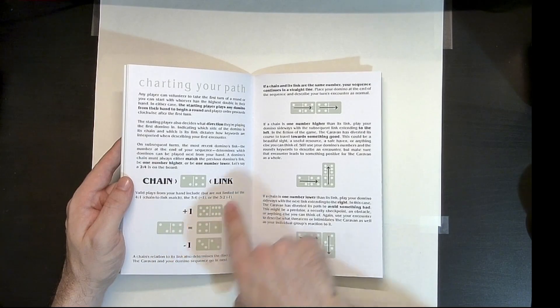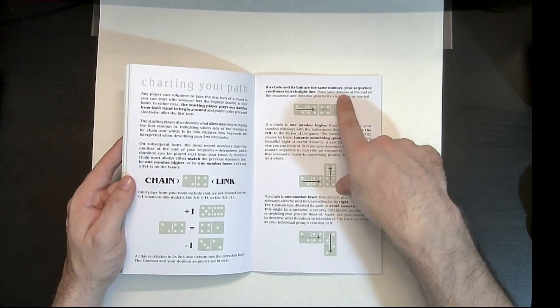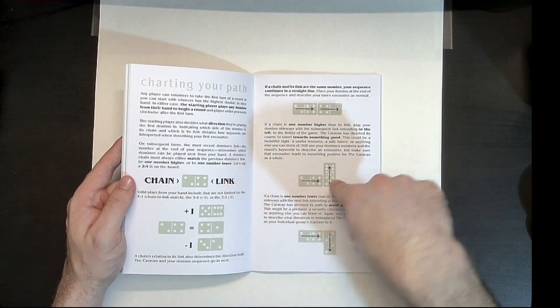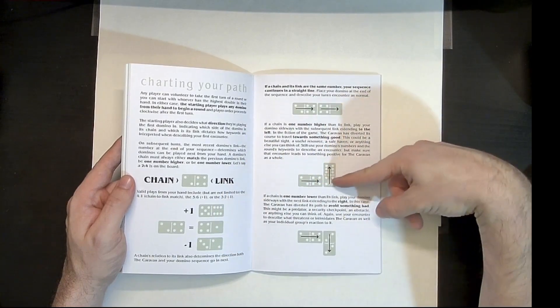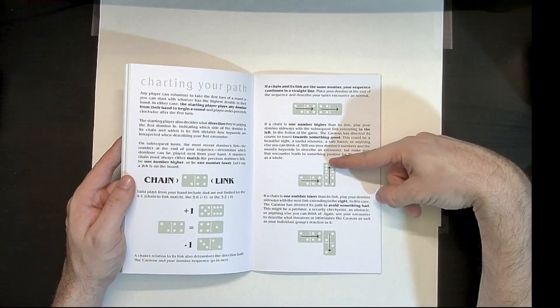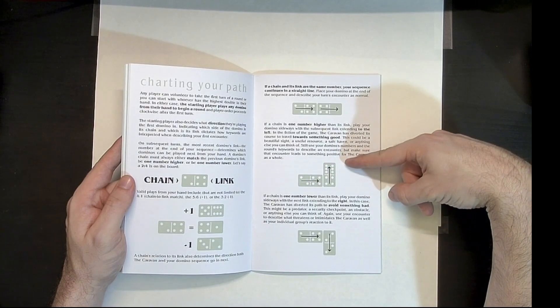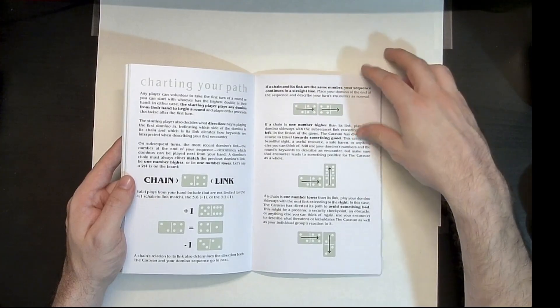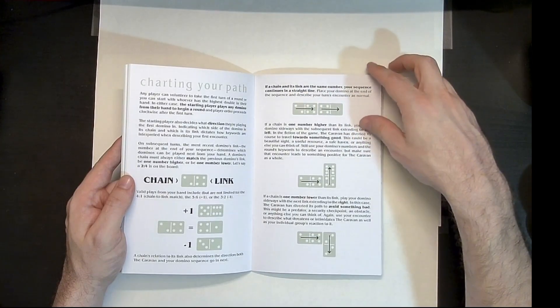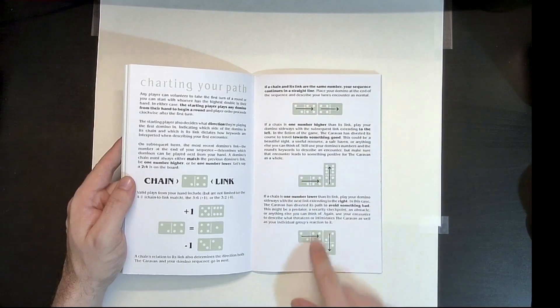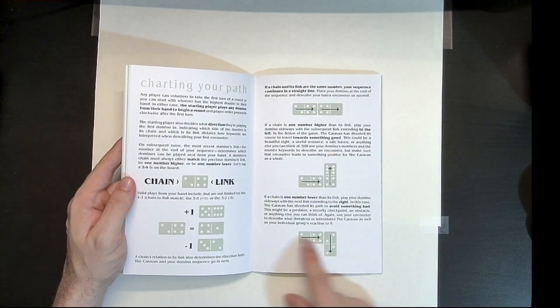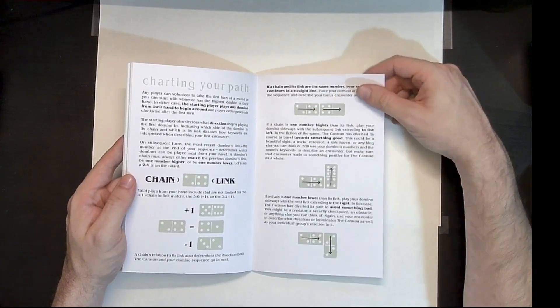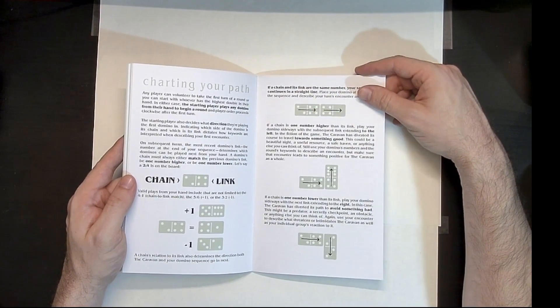So it says here, if the chain and its link are the same number, your sequence continues in a straight line. If it's one higher than the link, then you play your domino sideways and the subsequent link extends to the left. Okay, so it says here, the caravan is diverted its course to travel towards something good. This could be a beautiful site, a useful resource, a safe haven, or anything like that. And then of course, if you play down, then you're going down. This means that you're diverting in order to try to avoid something bad. This might be a predator security checkpoint obstacle or anything else you can think of.